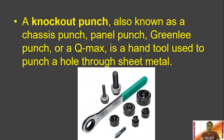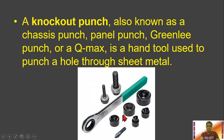Next we have the knockout punch, also known as a chassis punch, panel punch, Greenlee punch, or Q-Max. It is a hand tool used to punch a hole to shape metal. It is usually used to bore or create holes on metal sheets. In electrical work, it is commonly used to make holes on the side, bottom, or top of our electrical panel. The tool has a handle, blades, and a locking mechanism.